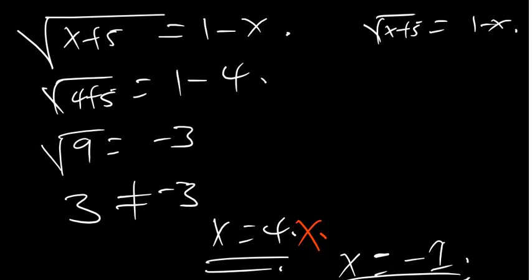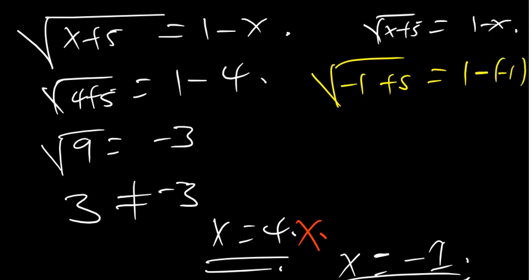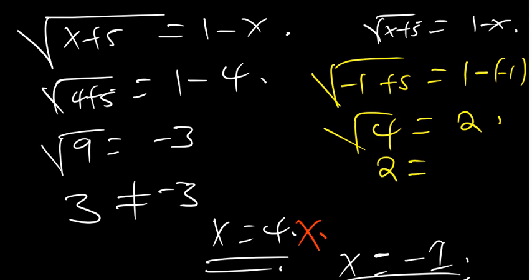Now let's test x equals negative 1: square root of (negative 1 plus 5) equals 1 minus negative 1, so square root of 4 equals 2, meaning 2 equals 2. That's true, so x equals negative 1 is the only solution for this equation. That's how you solve radical equations. Thank you.